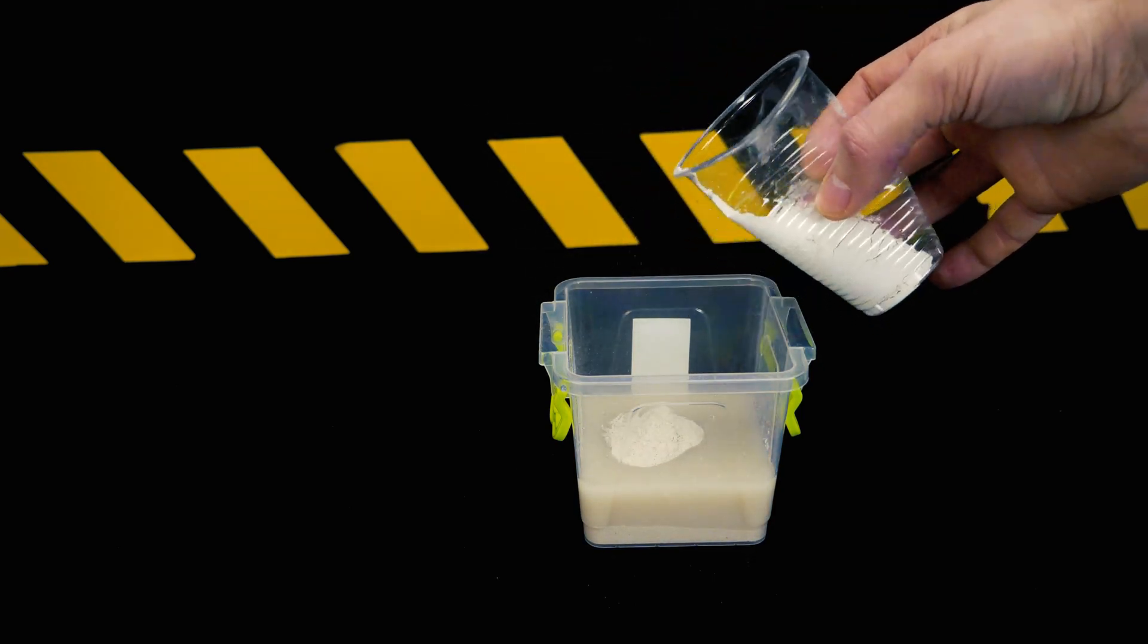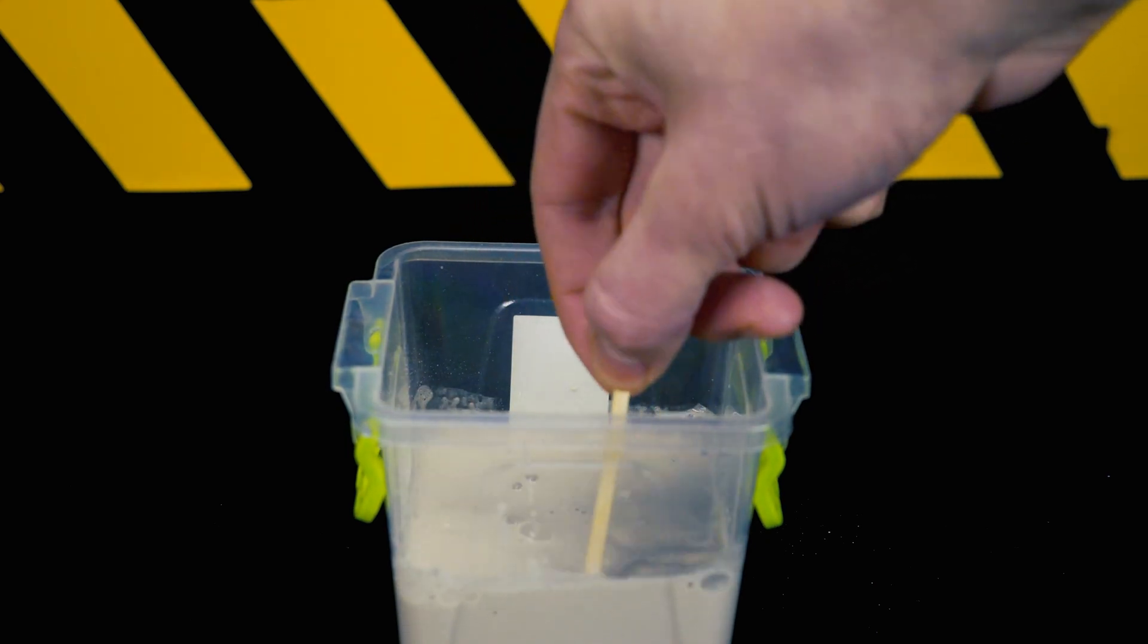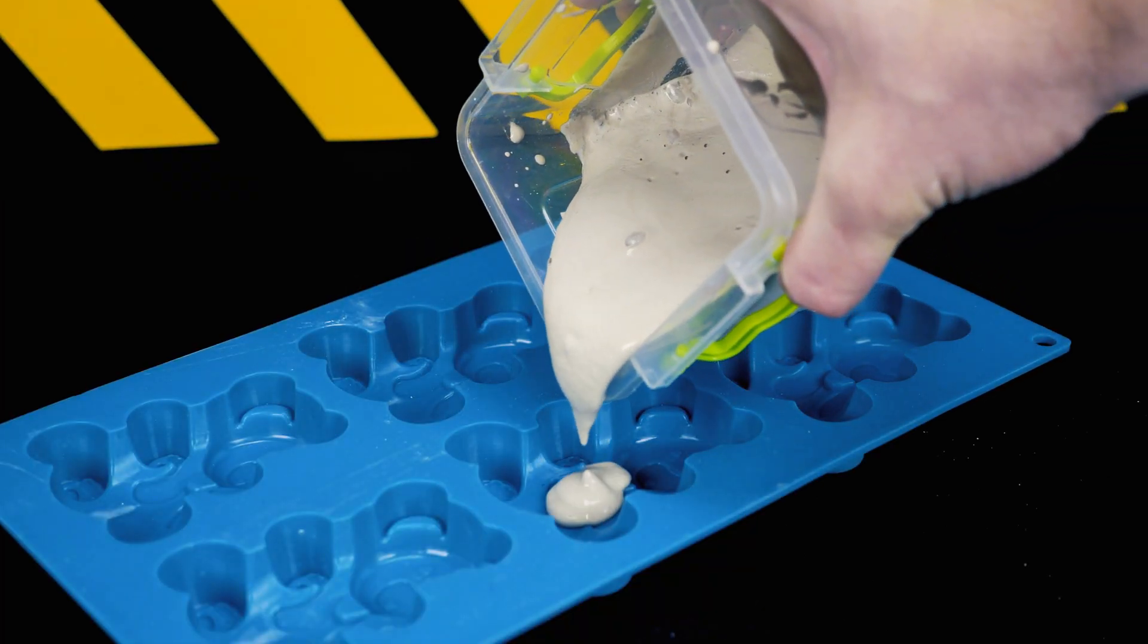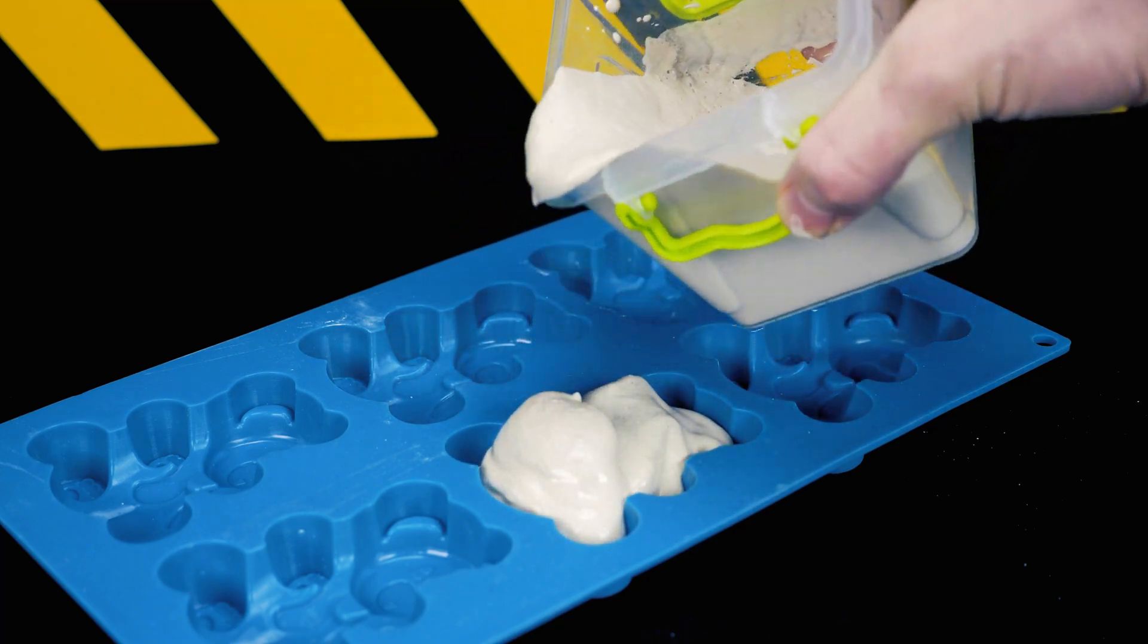We all know that different cool shapes can be cast from gypsum. To do this, you need to choose the right proportion of dried gypsum powder and water. Then mix it all well and pour into a special mold.